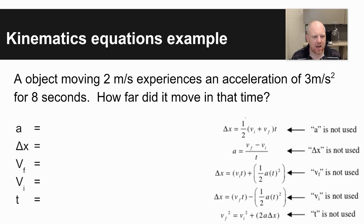Step one, identify what you're given. There are five different variables you may be picking out here. One, an object moving two meters per second. Meters per second, that unit tells you velocity. And this is at the beginning of a scenario, so it's going to be our initial velocity.